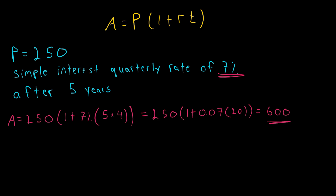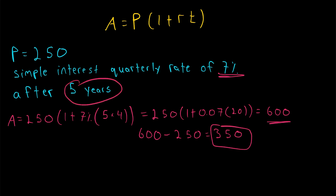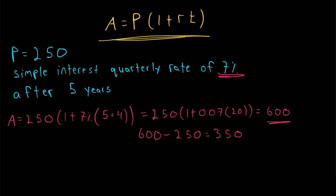So 600 is the total amount in the account after 5 years. We can easily calculate the interest earned by taking 600 and subtracting the principal investment of 250, which gives 350. That's the total interest earned after 5 years. Really, the only tricky part about a standard simple interest question is making sure your units of time are measured correctly.